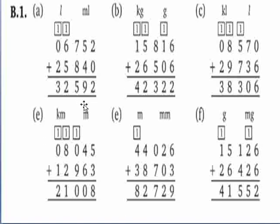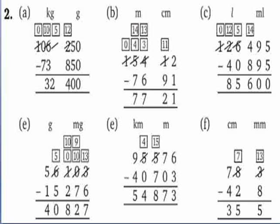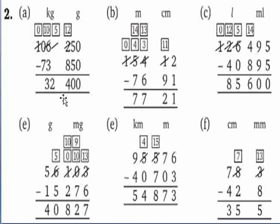Similarly you have to solve other parts of this question. Now question number 2: subtract the following. A part is 73 kilogram 850 gram from 106 kilogram 250 gram. Firstly arrange karenge column form mein. Subtract start karenge: 0 minus 0 is 0, 5 minus 5 is 0. 2 mein se 8 subtract nahi kar sakte, so 6 se 1 borrow karenge — 12 minus 8 is 4. Now 5 minus 3 is 2. 0 mein se 7 subtract nahi kar sakte, so 1 borrow karenge — 10 minus 7 is 3. So answer is 32 kg 400 gram.